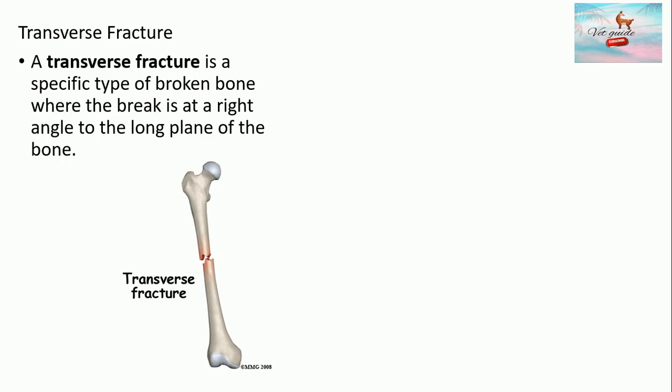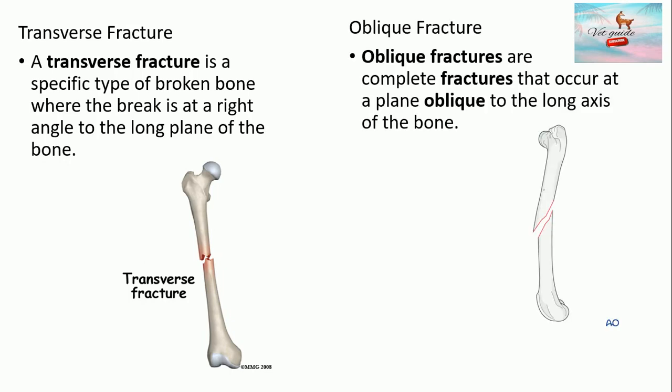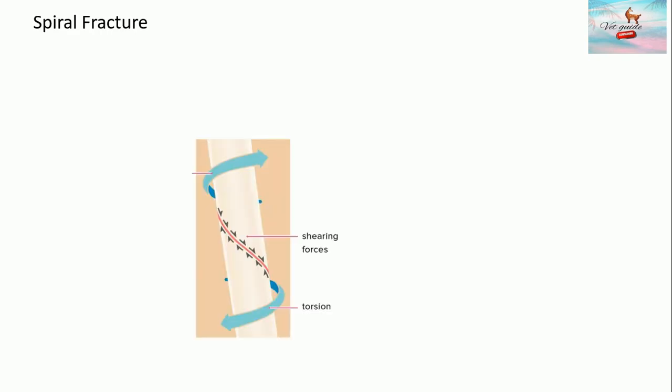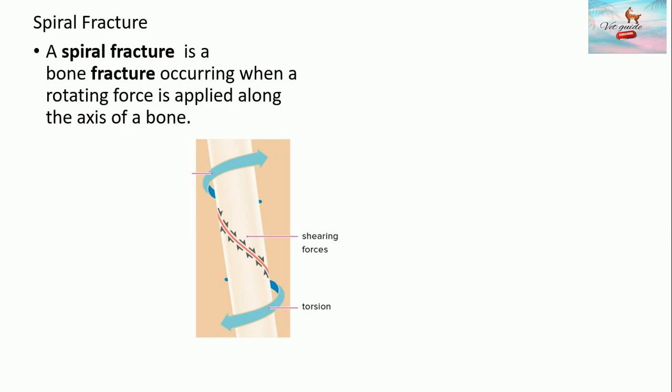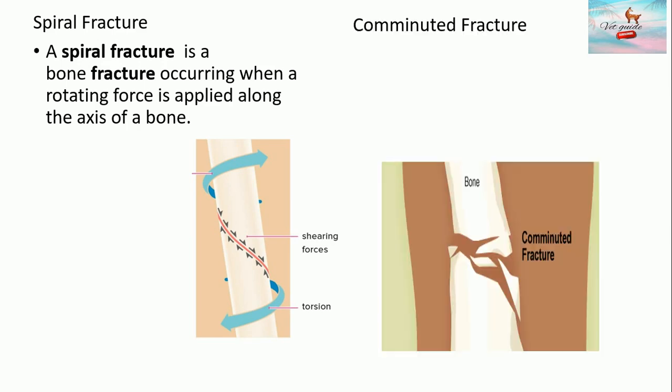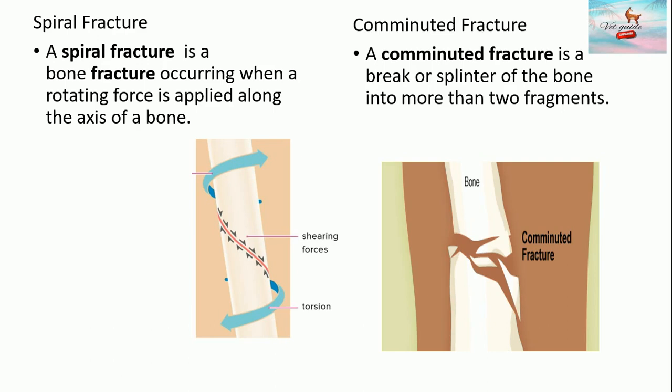A transverse fracture is a specific type of broken bone where the break is at a right angle to the long plane of the bone. In contrast, oblique fractures are complete fractures that occur at a plane oblique to the long axis of the bone. When a rotating force is applied along the axis of a bone, that is called a spiral fracture. A comminuted fracture is a break or splinter of the bone into more than two fragments. The image in front of you will clarify your concepts regarding these definitions.